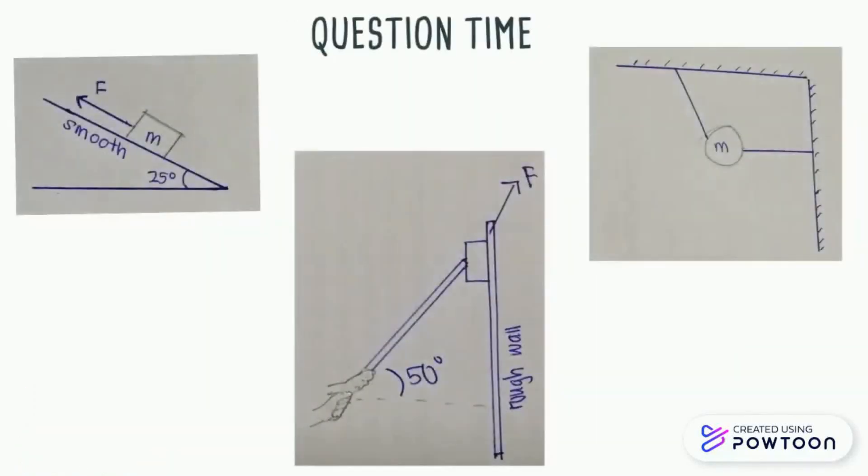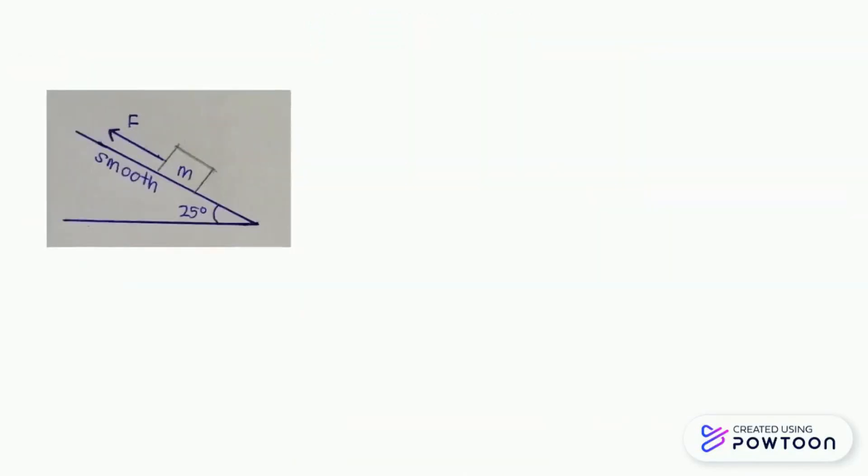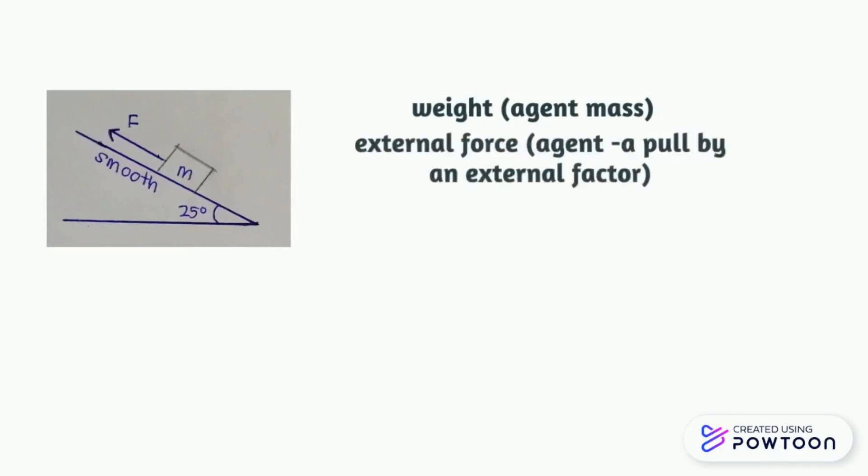Now it's time to test your understanding. Identify all the forces acting on each of the cases below. The object is being pulled up on a smooth plane, so the object here has a mass so it is going to experience weight force. Being pulled up leads to external force present, and also it is in contact with a smooth surface, which leads to the presence of normal force.